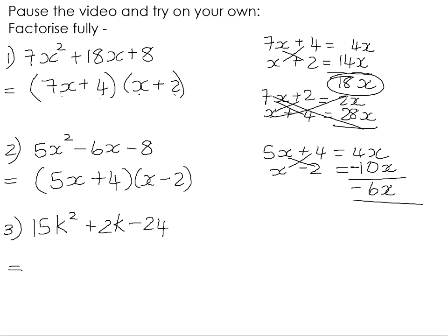In number 3, a little bit more complex because there's two different combinations to give us 15. You could have had 1 and 15 or 3 and 5 and there's quite a few factors of 24. So you might have found with this one that it took you a few tries to get the correct factors, which would have been 3k plus 4 and 5k minus 6.